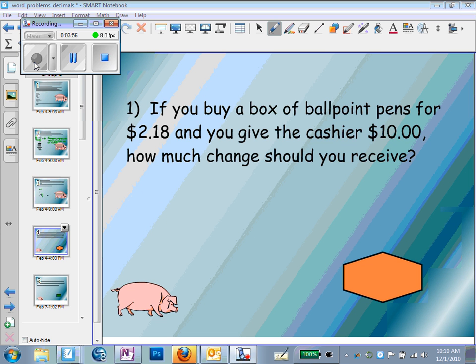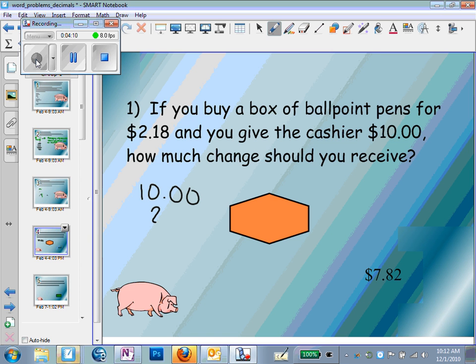In this example, if you buy four ballpoint pens for $2.18, and you give the cashier $10, how much change should you receive? It's $7.82. This is subtracting $2.18 from $10, and that was $7.82.